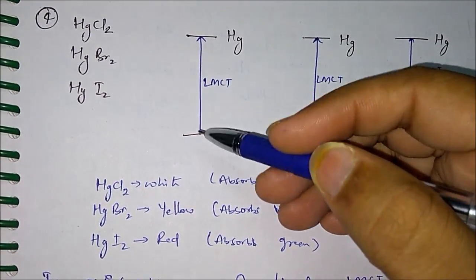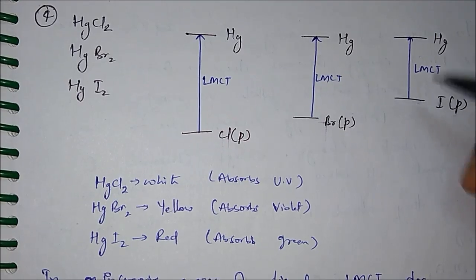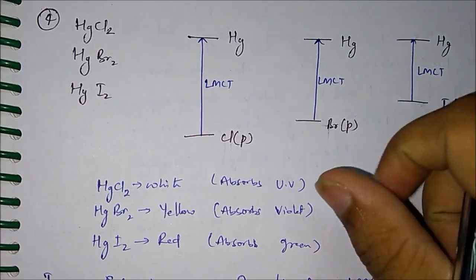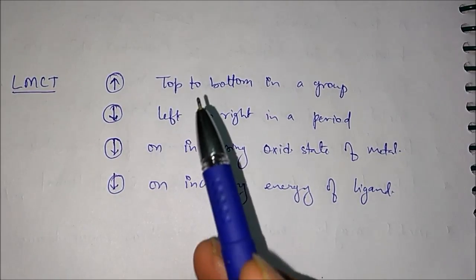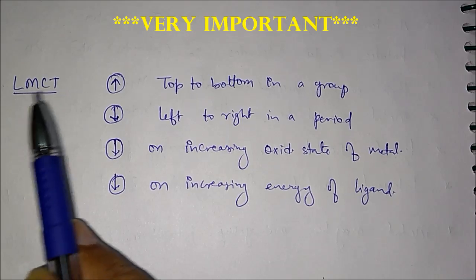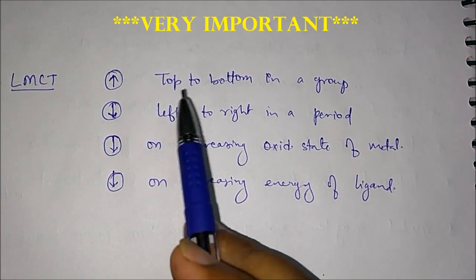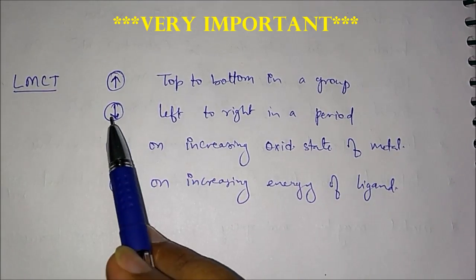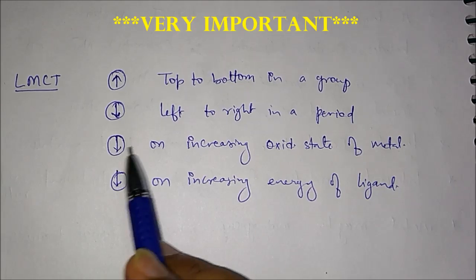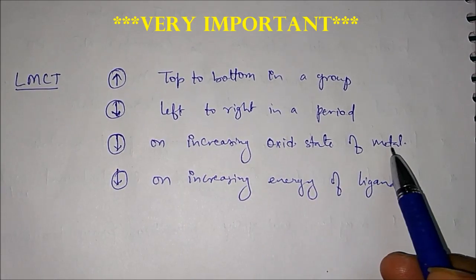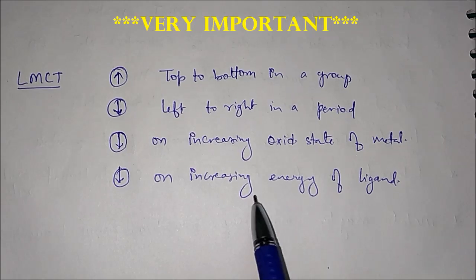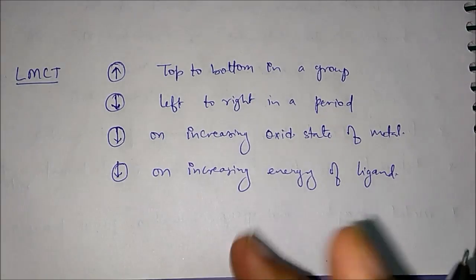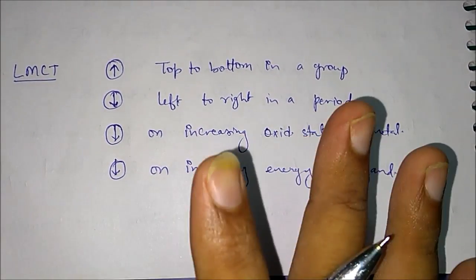To summarize the four key points about LMCT energy: it will increase when you move from top to bottom in a group; it will decrease when you move from left to right in a period; it will decrease when you increase the oxidation state of the metal; and it will decrease when you increase the energy of the ligand, as we showed going from chlorine to iodine. This is all about LMCT.